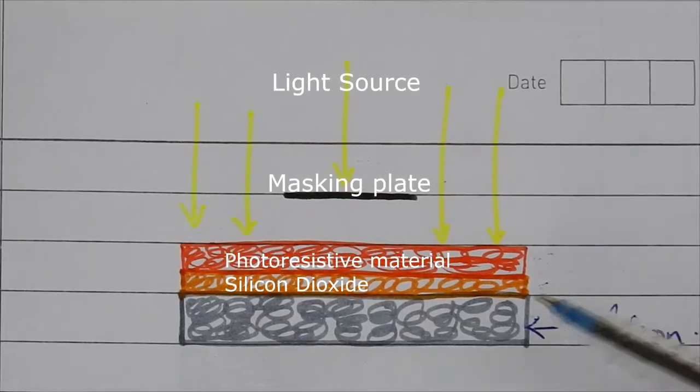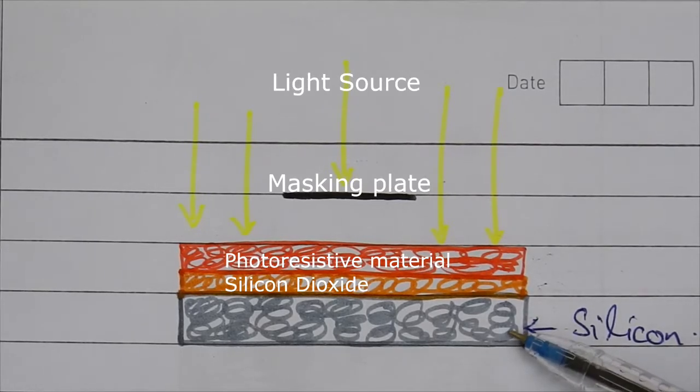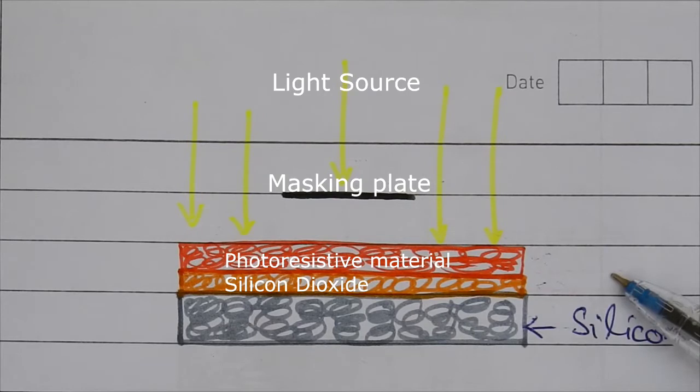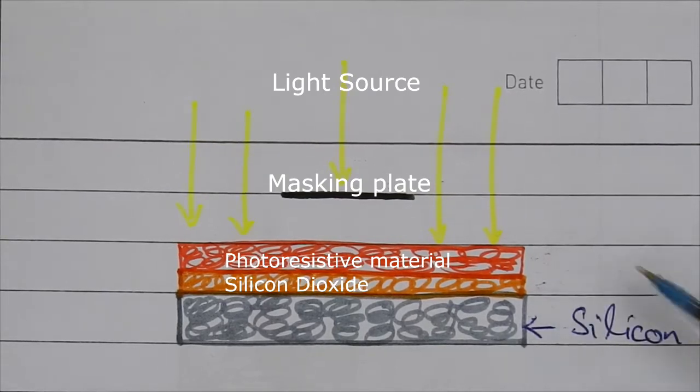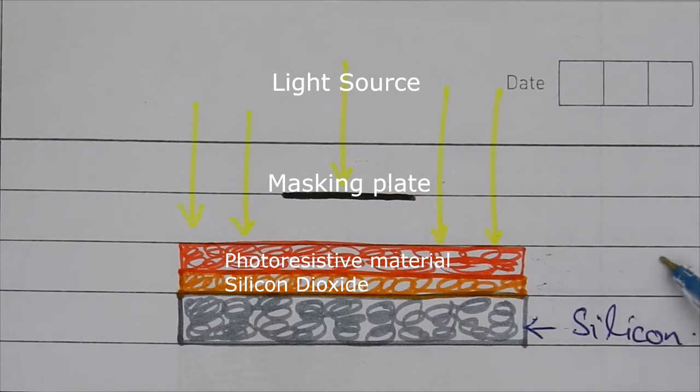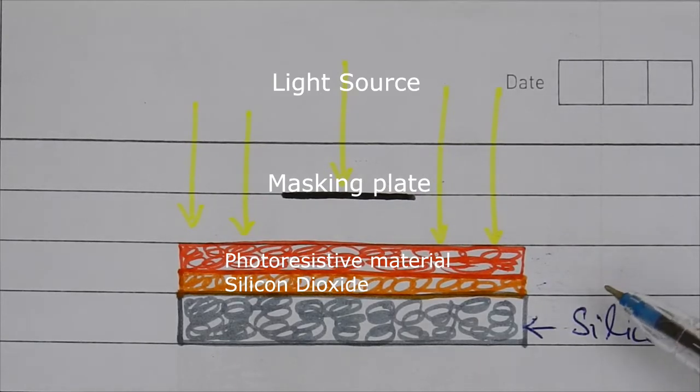We have a very thin silicon wafer. On this wafer, we deposit silicon dioxide. On top of that, we apply photoresistive material. This photoresistive material becomes hard when exposed to light.